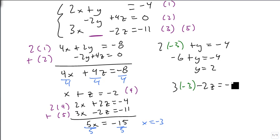And 3 times minus 3 minus 2z equals minus 11. So minus 9 minus 2z equals minus 11. Minus 2z equals minus 2. So z equals 1.